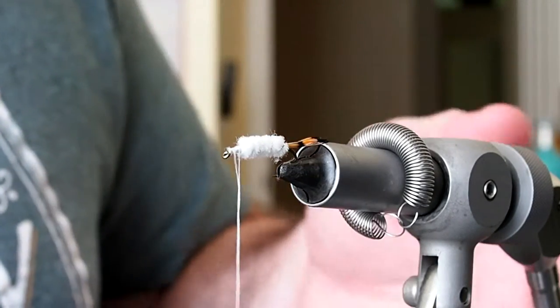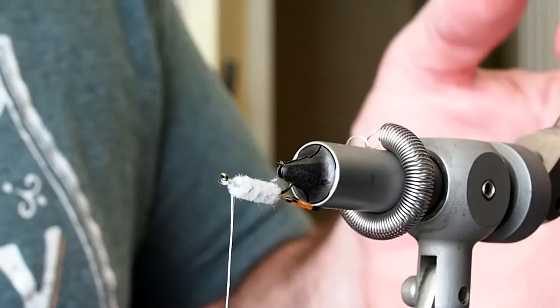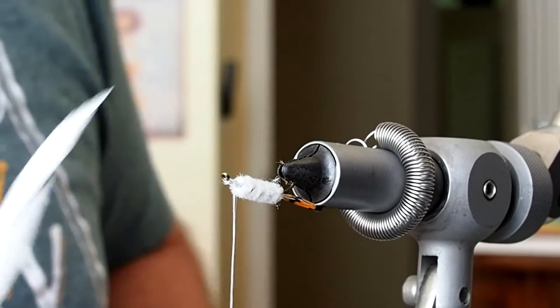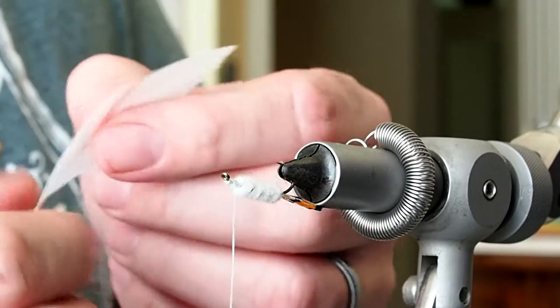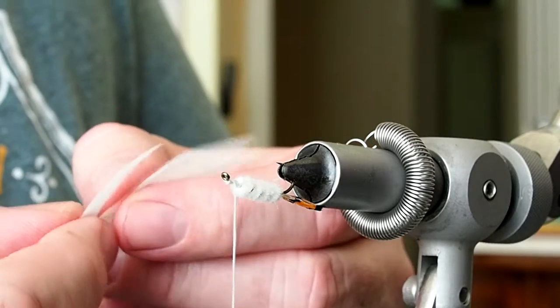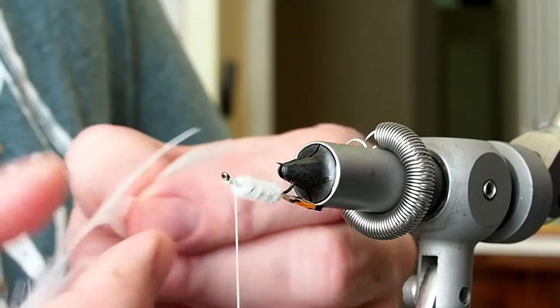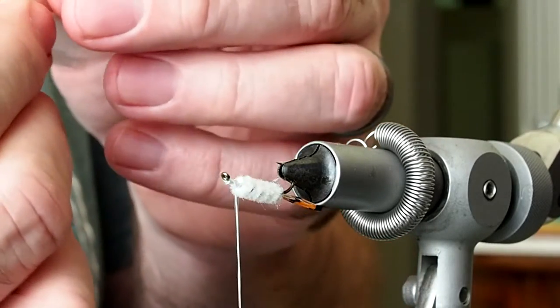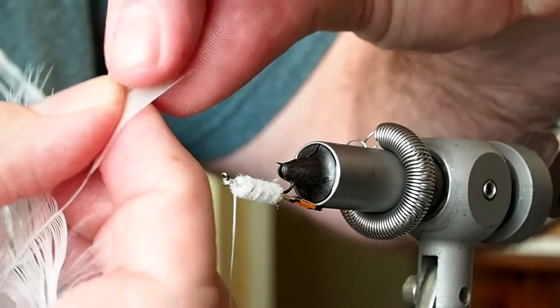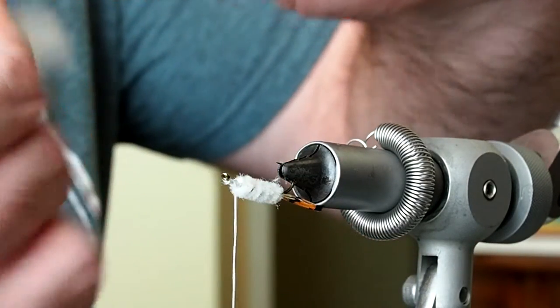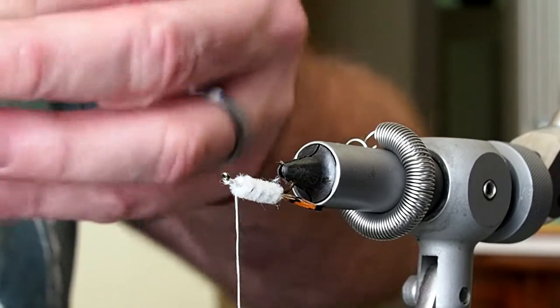Next we're going to tie on a throat. To do that I'm going to use a white saddle hackle and just pull off a section of barbs. I like a webbier hackle for our throat so I just think it looks better.